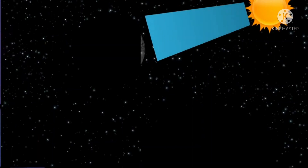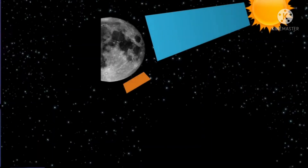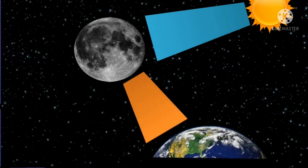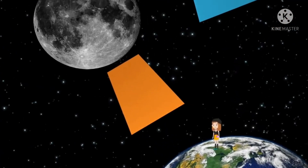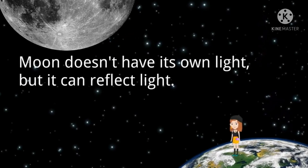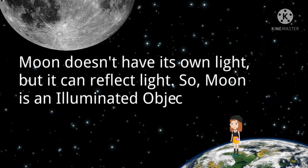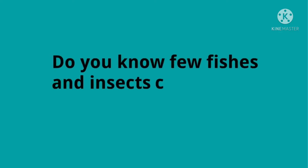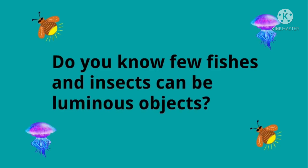Sunlight is falling on the moon and it is reflected to our earth, and we can see the moon. From the earth you can see that moon. Moon does not have its own light, but it can reflect. So moon is an illuminated object.